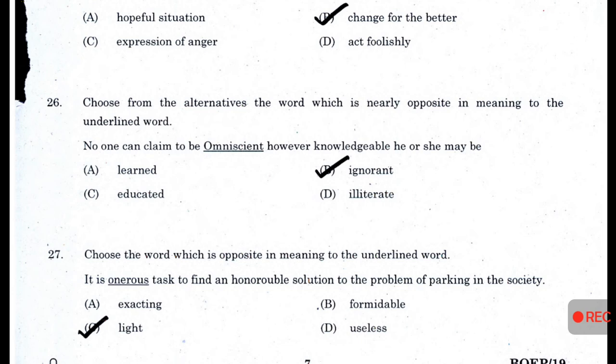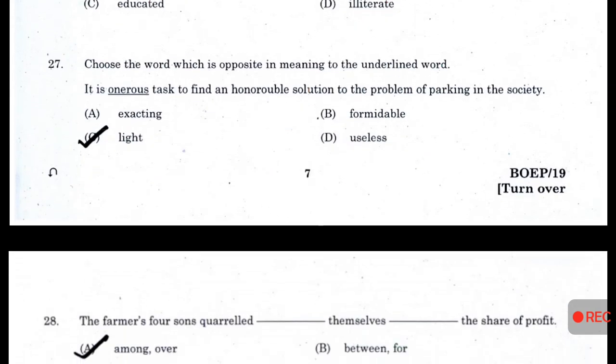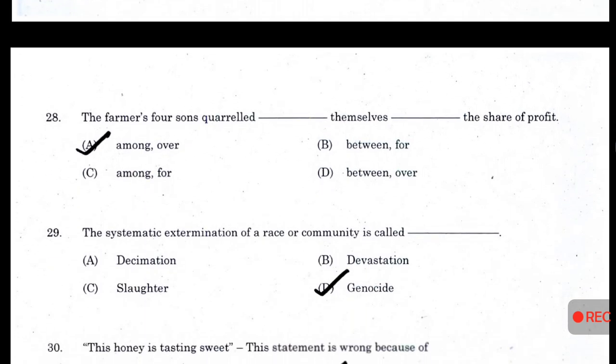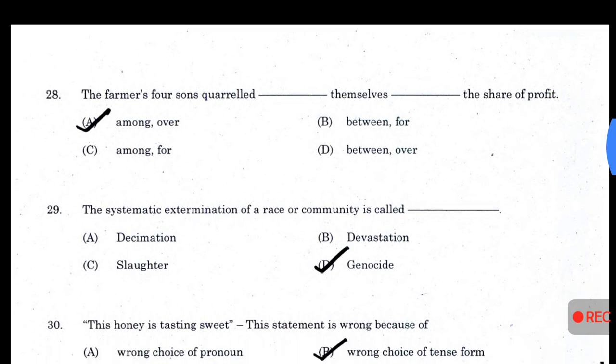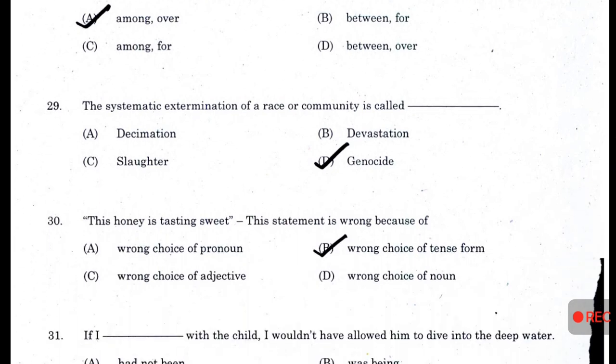Choose the word nearly opposite in meaning to the underlined word 'omniscient' — answer B — ignorant. Choose the word opposite in meaning to 'honorous' — answer C — light. 'The farmers squirreled among themselves over the share of profit' — answer A. The systematic determination of a race or community is called genocide.